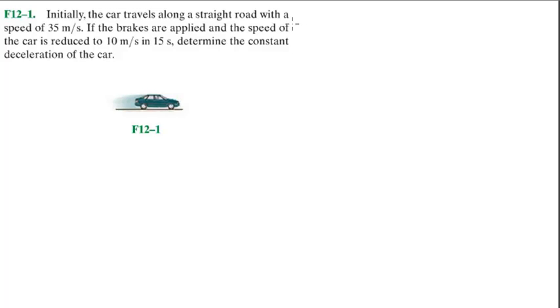Initially, the car travels along a straight road with a speed of 35 meters per second. If the brakes are applied and the speed of the car is reduced to 10 meters per second in 15 seconds, determine the constant deceleration of the car.